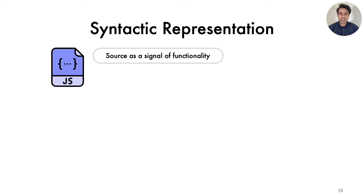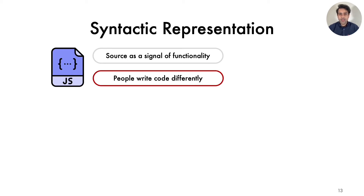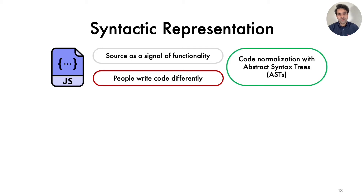In syntactic representation, we treat script source as a signal of its functionality — basically, we are trying to interpret what the script was written to do. However, people have different coding styles: some add comments, some don't, and some prefer a particular syntax over another. So before we can interpret the meaning of scripts, we need to normalize them in a uniform format. To do that, we model the script source in abstract syntax trees, which normalizes scripts for developers' coding styles.